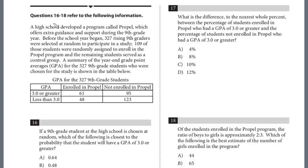These three questions are all relating to this information — this one has three questions relating to it. A high school developed a program called PROPEL, which offers extra guidance and support during the ninth grade year. Before the school year began, 327 rising ninth graders were selected at random to participate in the study. 109 of those students were randomly assigned to enroll in PROPEL, and the remaining students served as a control group. A summary of the year-end GPA for the 327 ninth grade students chosen for the study is shown in the table below.